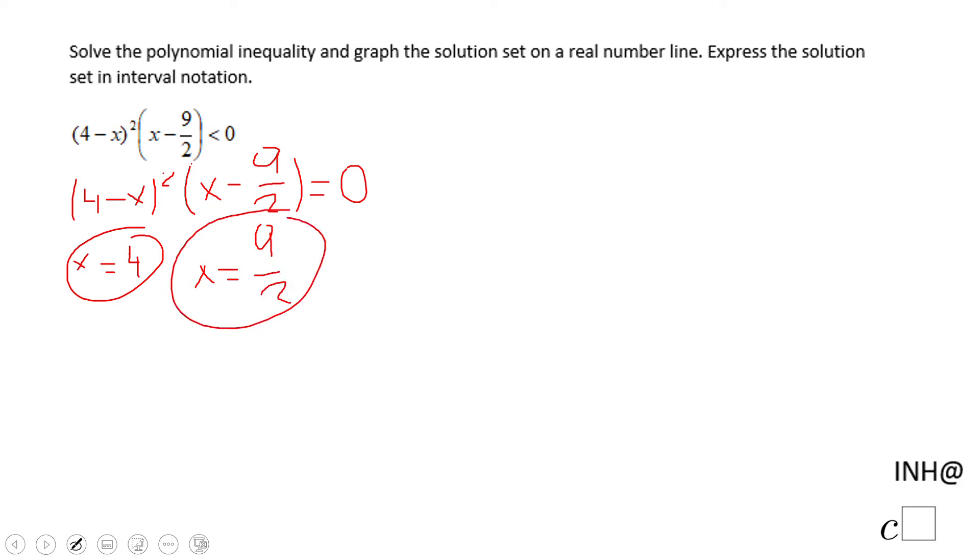Now we can use a table to figure out how this polynomial, which I'll call f(x), behaves. I'm going to put... actually, let me correct that. The first one will be 4, and the second one will be 9/2. Very important. So 4 here and 9/2 here.